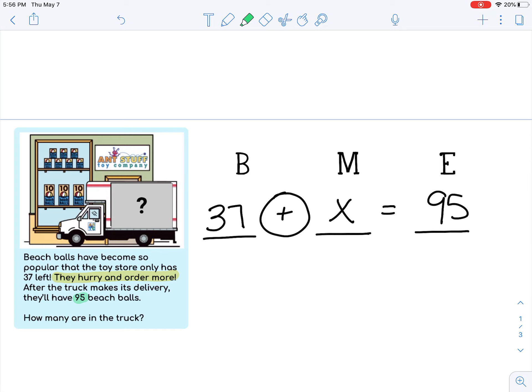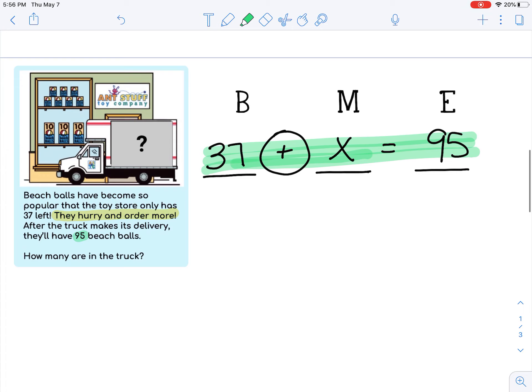So then we know, since they order more, that must be what they need us to figure out—is how many they order. So that is why we have 37 plus x equals 95. So again, we want to make sure you understand this is the equation that you should have written on the previous slide.